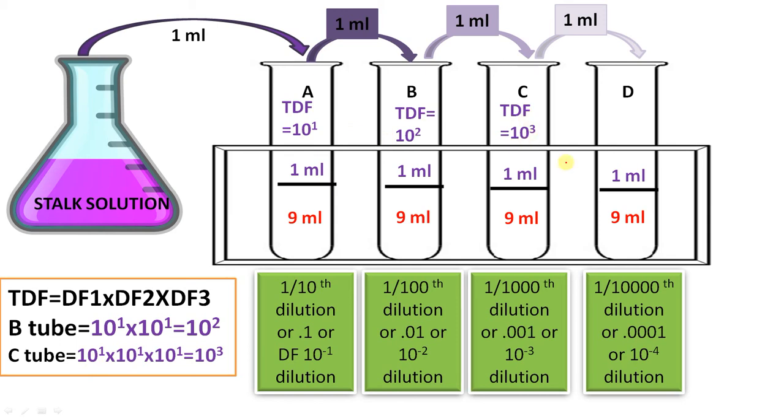In the fourth test tube the same thing happens that forms 1 by 10000 dilution, that is 10 raised to minus 4. Therefore the total dilution factor becomes 10 raised to 4. That is 10 raised to 1 into 10 raised to 1 into 10 raised to 1 into 10 raised to 1, that makes 10 raised to 4. That means 10,000 times or 10,000 fold decrease in concentration compared to the original stock solution.